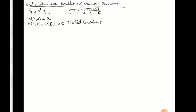Just like before, we take the product form: u(x,t) is a product of a function X(x) and a function T(t). Then we plug it into the PDE. So we have u_t, which is X · T' equals a² · X'' · T. And let's separate — we divide by T and by X.